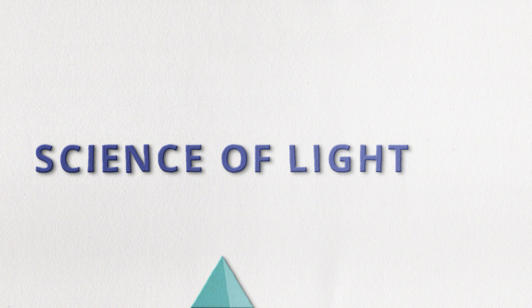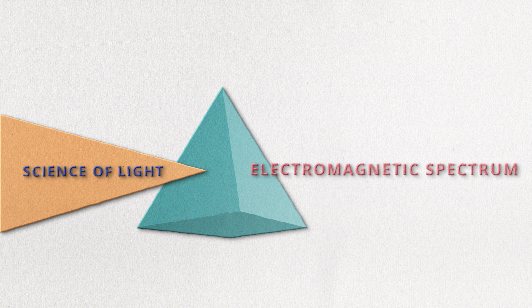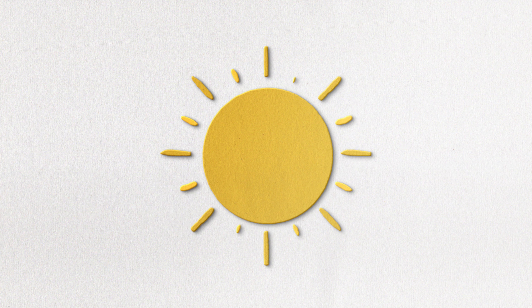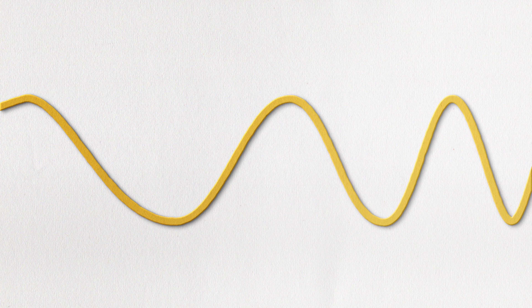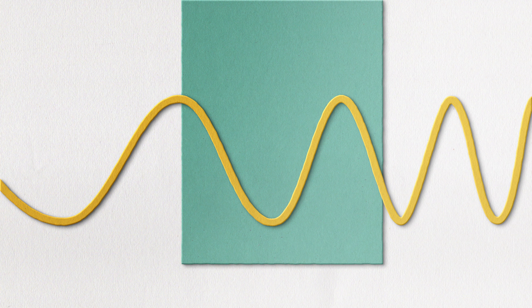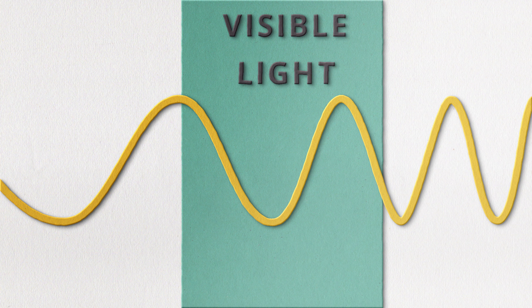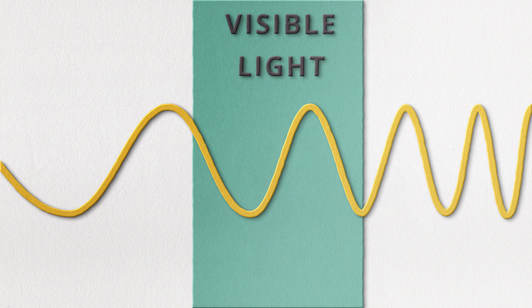It is important for you to understand some basic concepts regarding the electromagnetic spectrum. As you know, that big ball of fire in the sky that we call the sun is continuously emitting light, and that light can be split into different types of light. The one most relevant to us is visible light, because it's how we see the world around us.